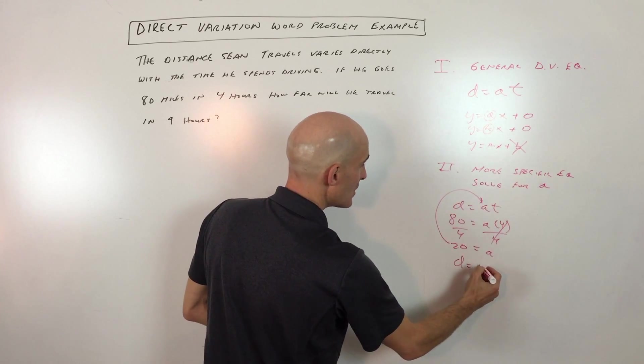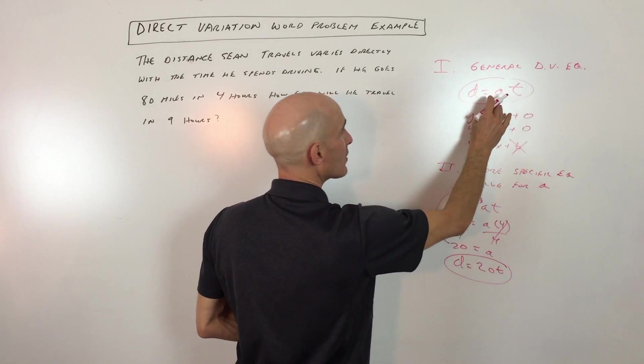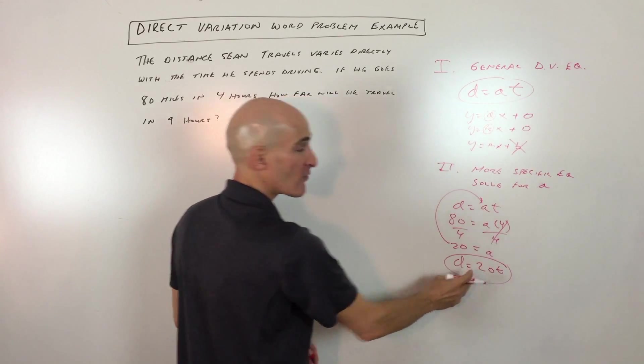Now you put the 20 back in and now we have our more specific equation which is d equals 20t. That's step number two. So here's step one, our general equation; step two, we have a more specific equation.